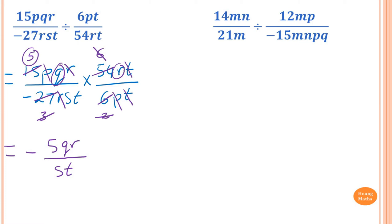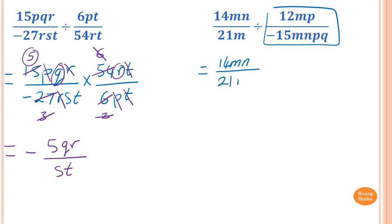For this problem, we flip the second fraction first to convert division into multiplication. So it becomes 14mn over 21m times negative 15mnpq over 12mp.